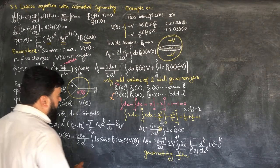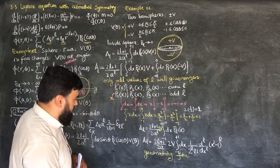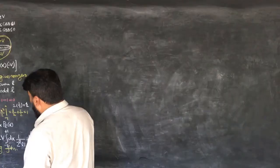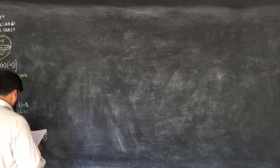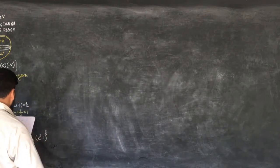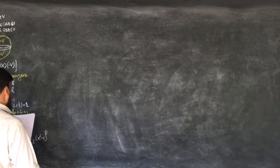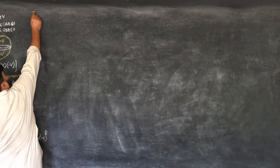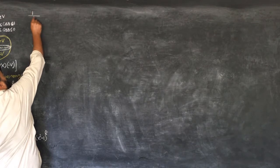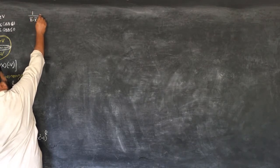Because we cannot solve this integral directly, we will go to the generating function in order to find out the value of this polynomial, or the integral. So in order to consider the generating function, we consider the potential due to a point charge on the Z axis, as viewed from some other point. We remember that we have written, in the Green's function as well, |X − X'| is equal to 1 over the square root of R² plus R'² minus 2RR' cos θ.